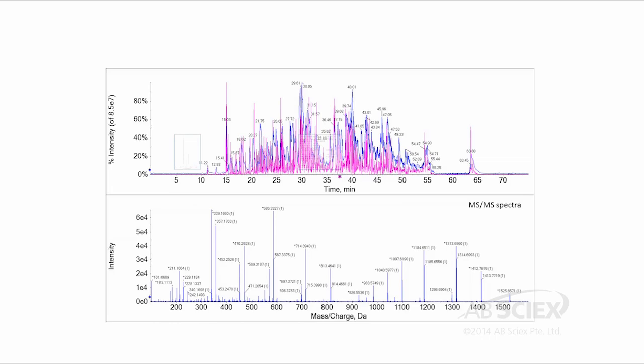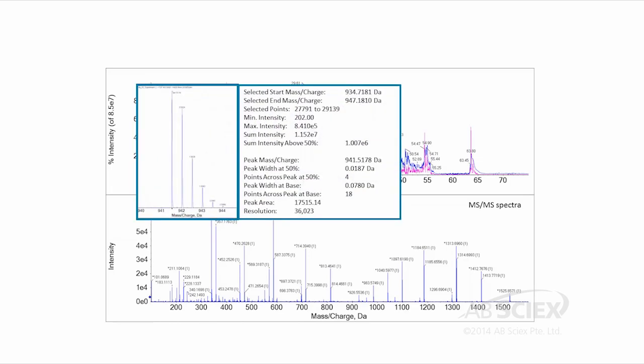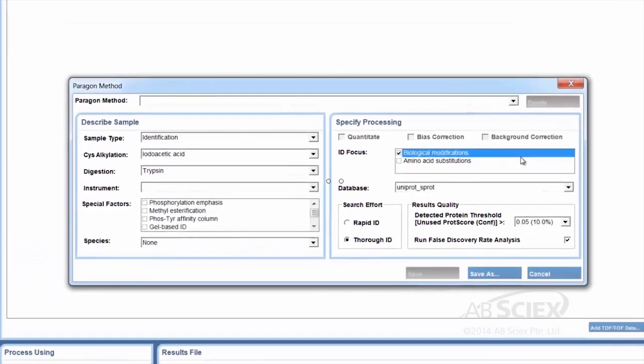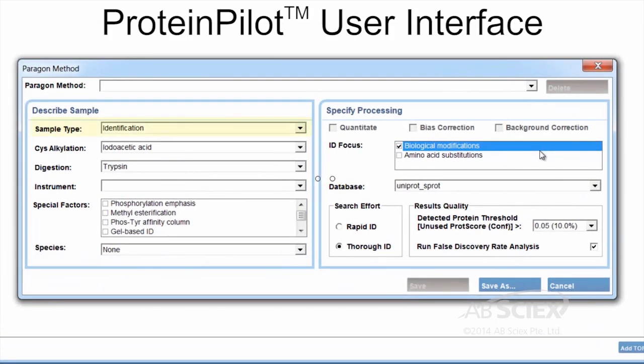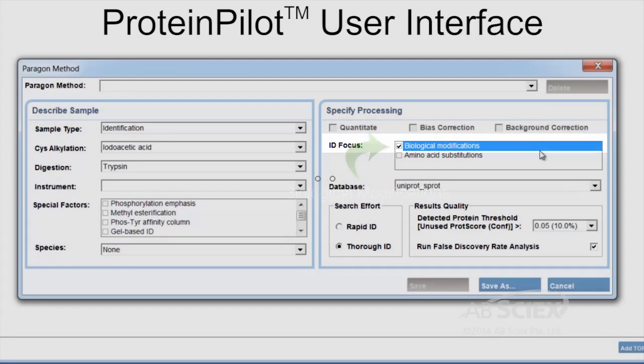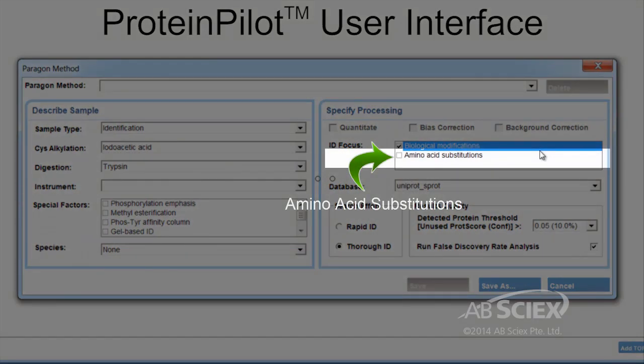The quality of the high-resolution MS-MS spectra obtained with the triple-TOF system ensures that the resulting identifications have high confidence. Based on the revolutionary Paragon algorithm, ProteinPilot enables the accurate identification of proteins while interrogating an extremely broad search space including over 500 biological and sample prep modifications.